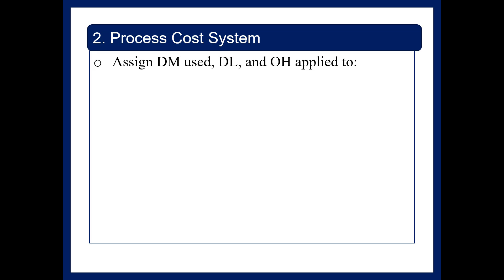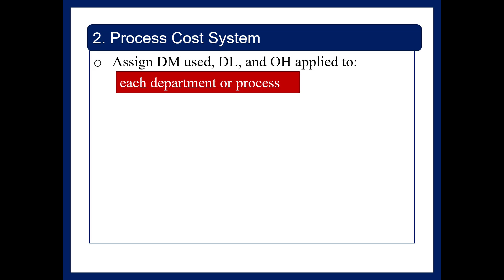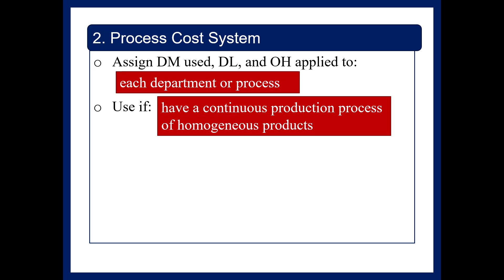In a process cost system, we assign direct material used, direct labor, and overhead applied to each department or process. We will use this if we have continuous production of a homogenous product — very similar products produced over and over where it is hard to distinguish one unit from the other.